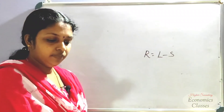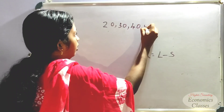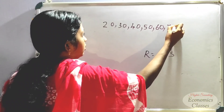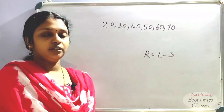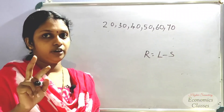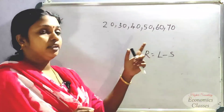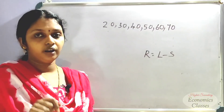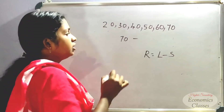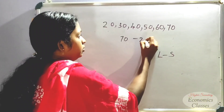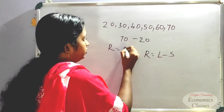We have data. Values are: 20, 30, 40, 50, 60, 70. We have to find the range and coefficient of range. What is the largest value? 70 is the largest value, minus the smallest value, 20. So, range equals 70 minus 20, which equals 50.